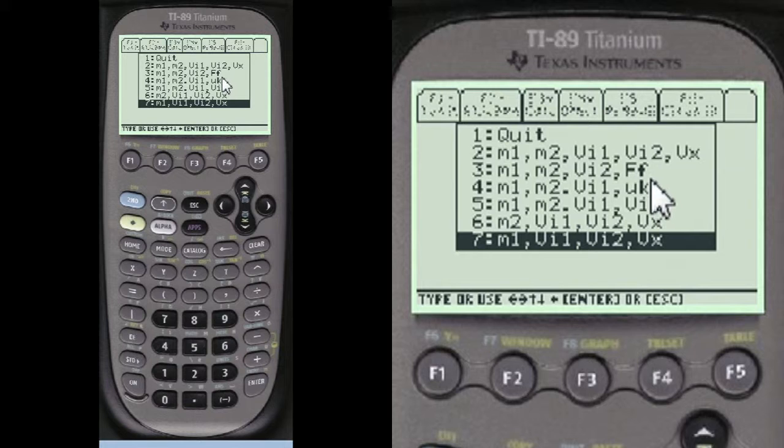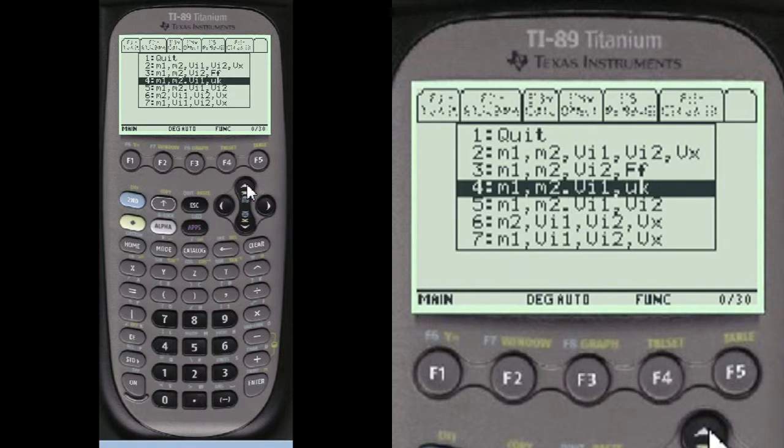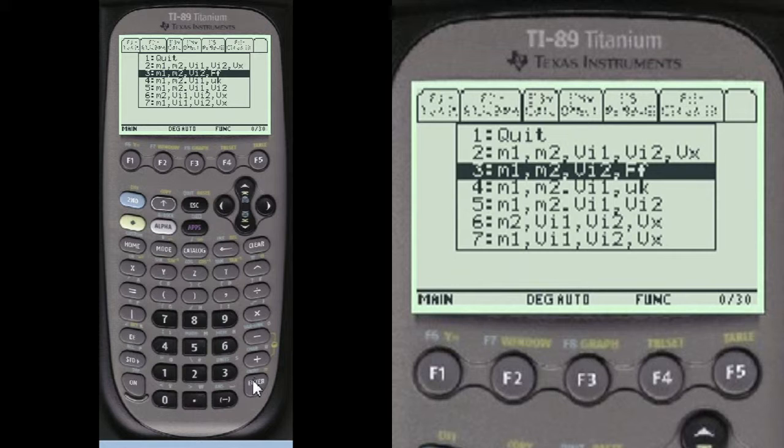And we're going to look for what's given, and what's given is mass 1, mass 2, velocity 2. Actually, both velocities are given, except one is at rest. And then friction force. We're going to choose that.